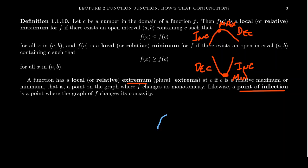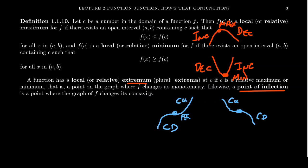So you might see something like the following: your function was concave downward, then it switched to be concave upward, giving you a point of inflection right there. Another example: you switch from concave upward to concave downward, and thus you get a point of inflection right there.